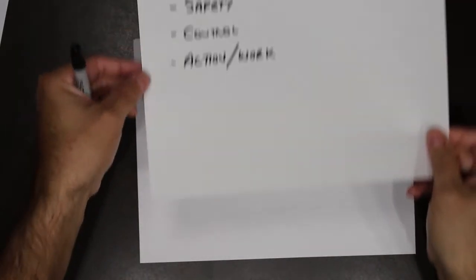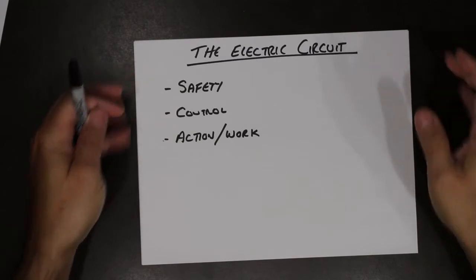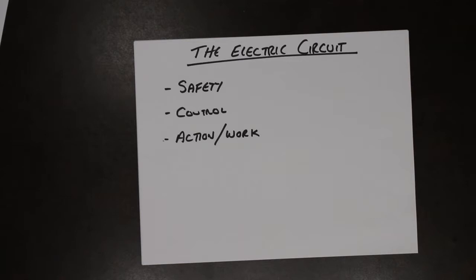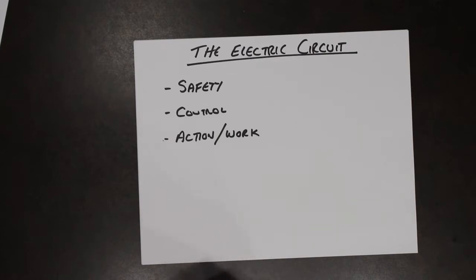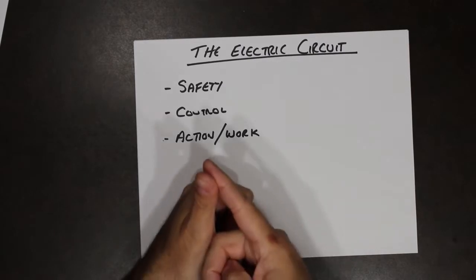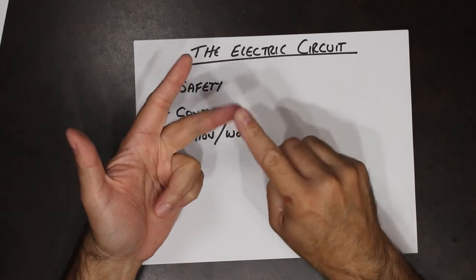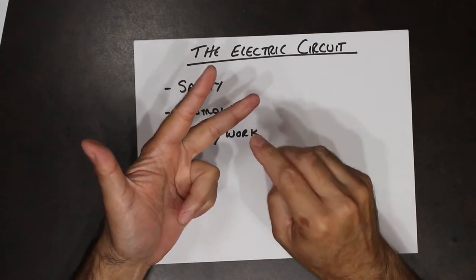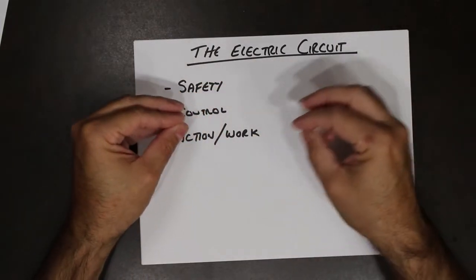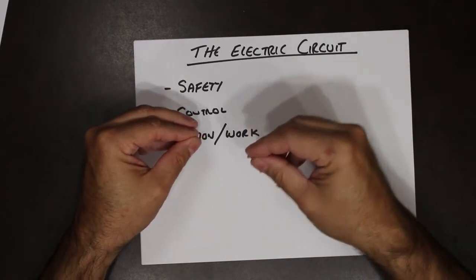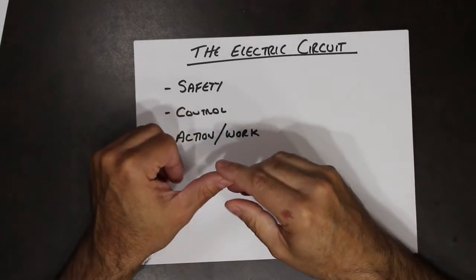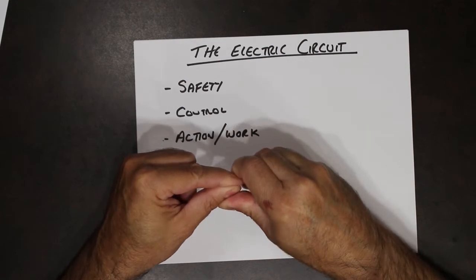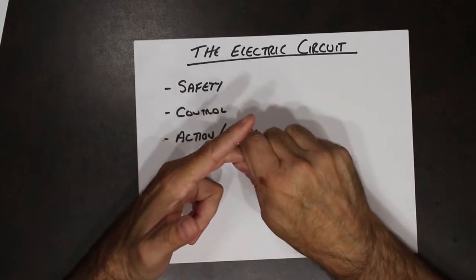So the electric circuit basics. I like to look at an electric circuit in three different elements. The first one being safety. There are elements of safety that are built into electric circuits, whether it be something along the lines of a fuse, a circuit breaker, or a ground fault interrupter. Some of them are there to protect you the user, and some of them are there to protect the actual equipment. Things like circuit breakers and fuses protect the equipment, while things like ground fault circuit interrupters protect you.